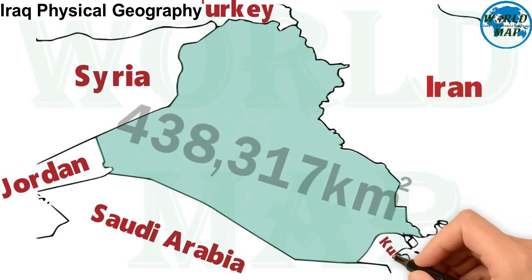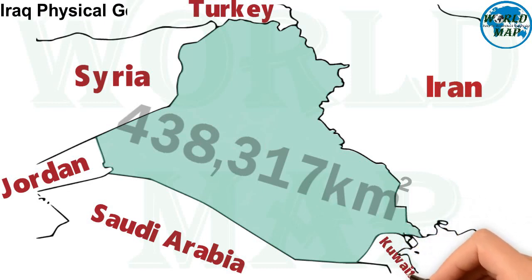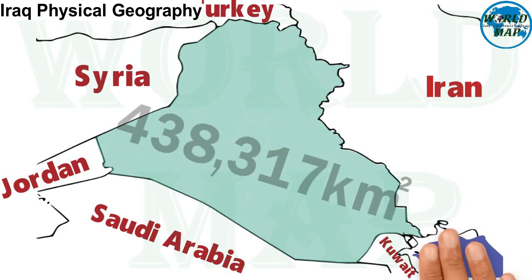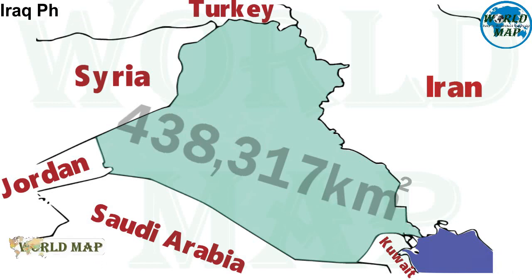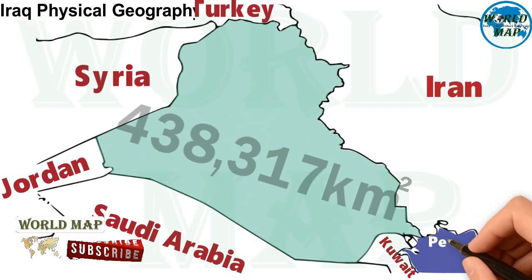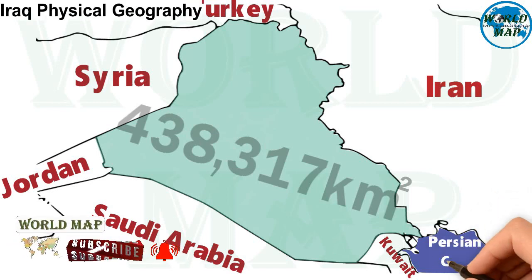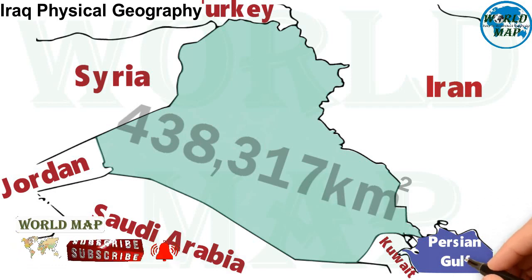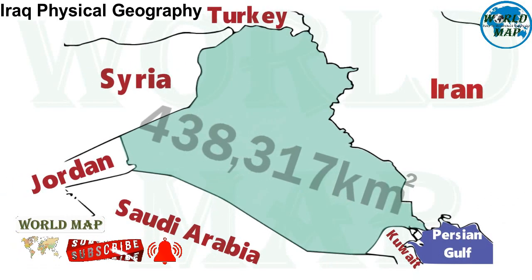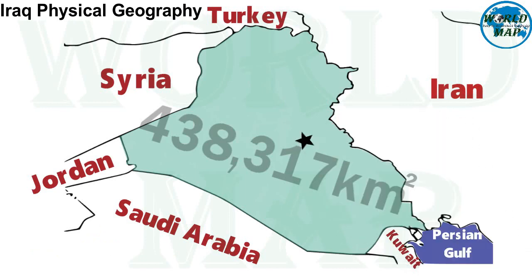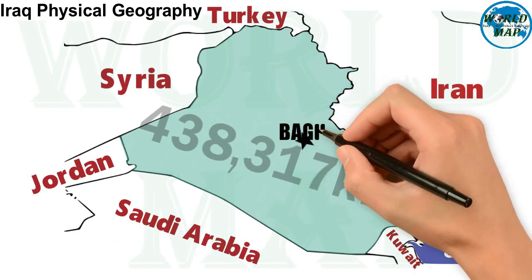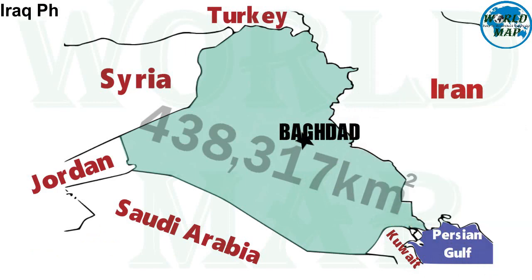The capital and largest city is Baghdad. Baghdad is the capital of Iraq and the second largest city in the Arab world after Cairo. It is located on the Tigris near the ruins of the ancient Akkadian city of Babylon and the Sassanid Persian capital of Ctesiphon.